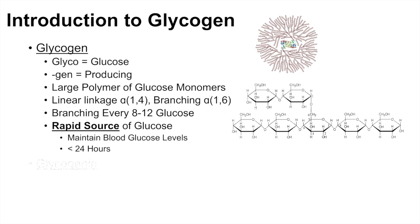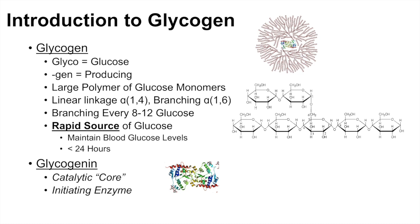There is an enzyme in the core of the glycogen called glycogenin. I like to call this enzyme the catalytic core, because it actually is an initiating enzyme — it itself begins the process of glycogen synthesis. It does this by autoglycosylating itself, actually producing or attaching chains of about 10 to 20 glucose monomers to itself, and that's how the whole glycogen synthesis process begins.